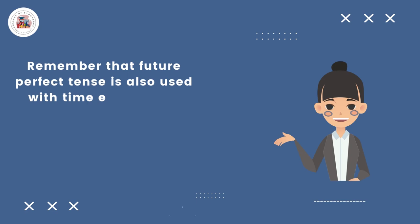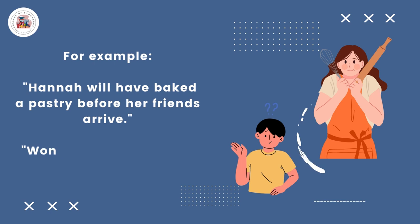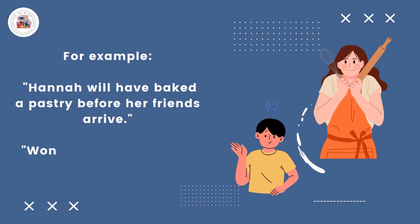Remember that the future perfect tense is also used with time expressions like: by the time, before, as soon as, and so on. For example: Hannah will have baked a pastry before her friends arrive. Won't Ollie have joined us by Saturday?